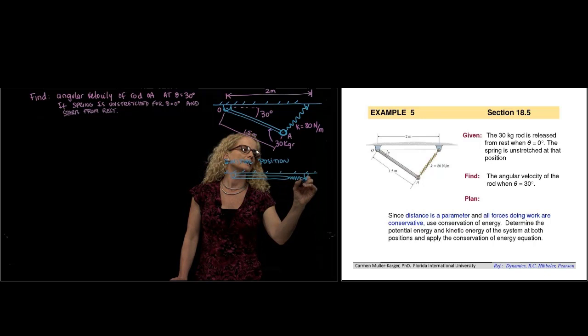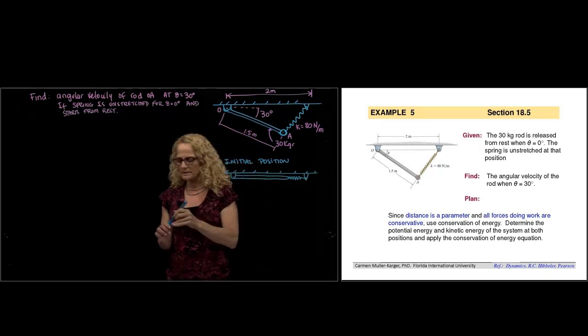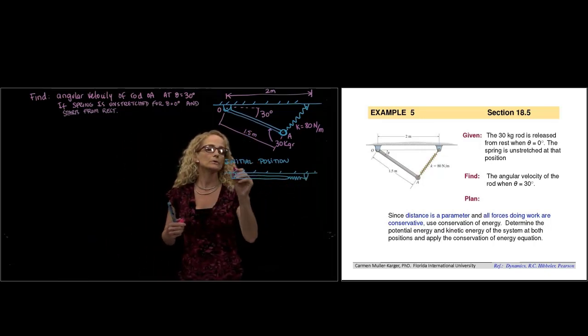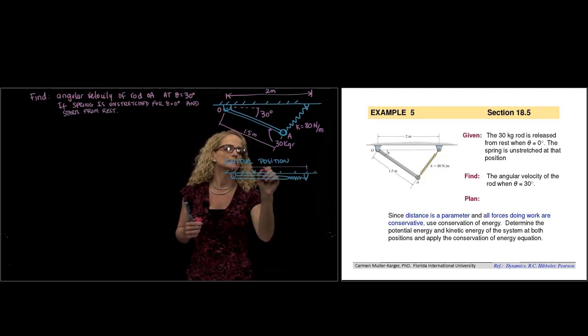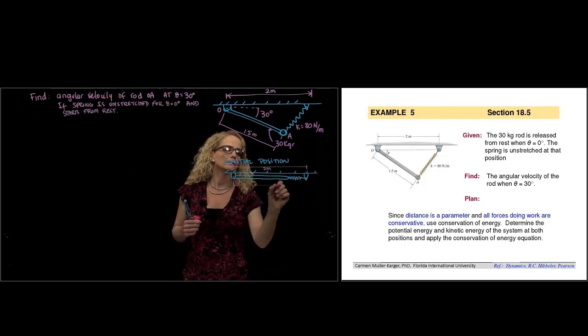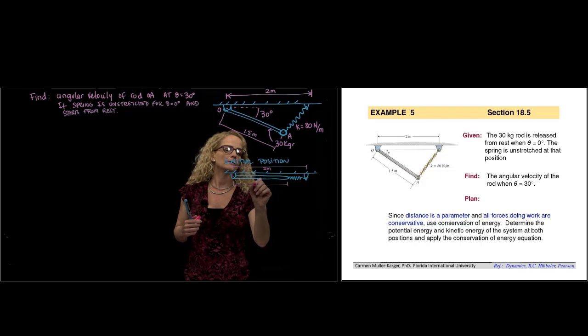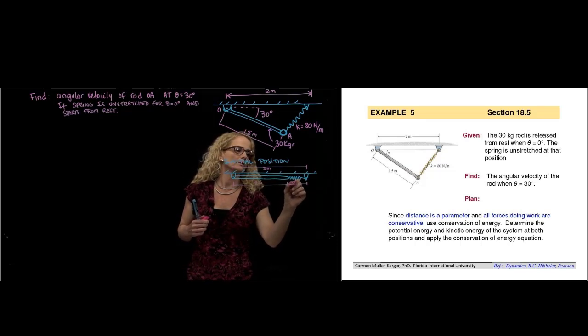So this will be the initial position where this distance is 2 meters, the total distance is 2 meters, this is 1.5, therefore this has to be 0.5.